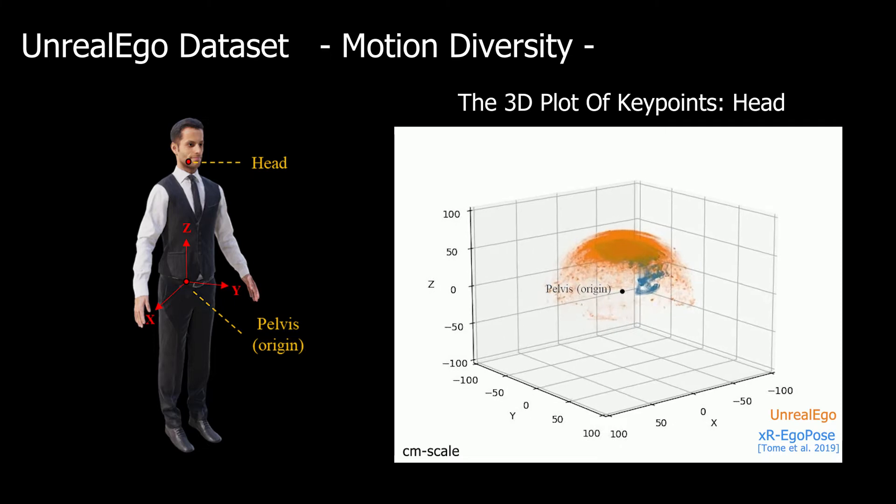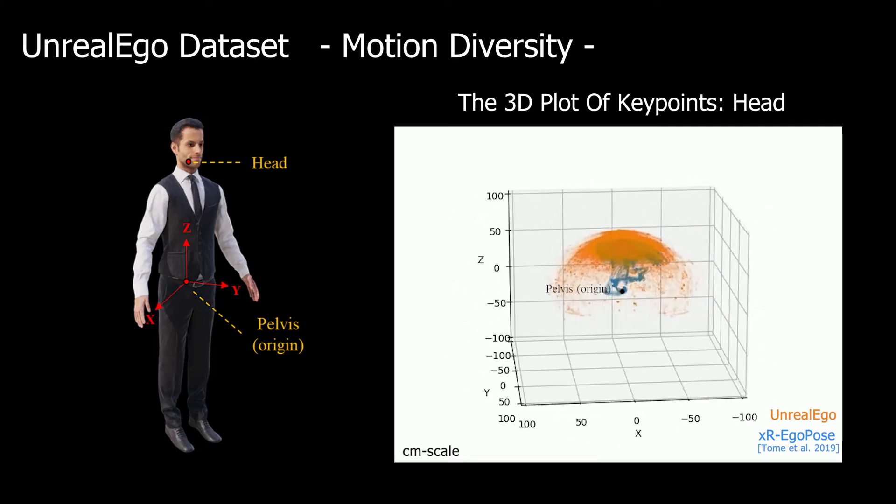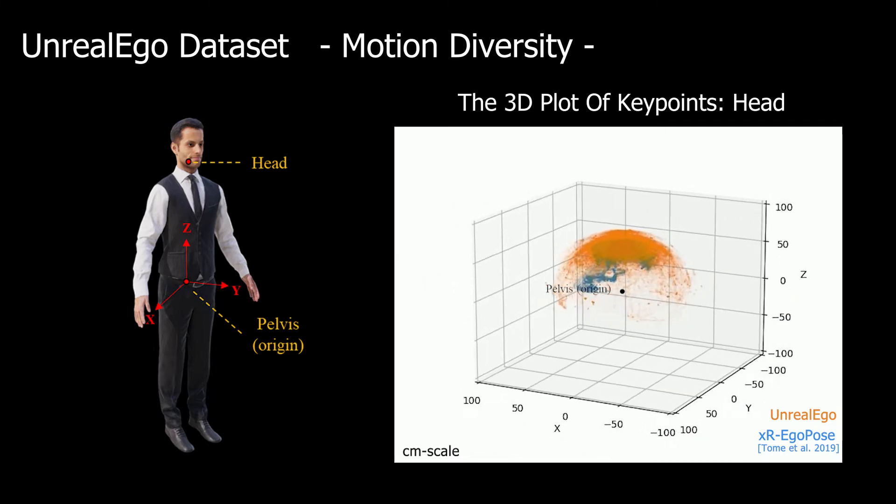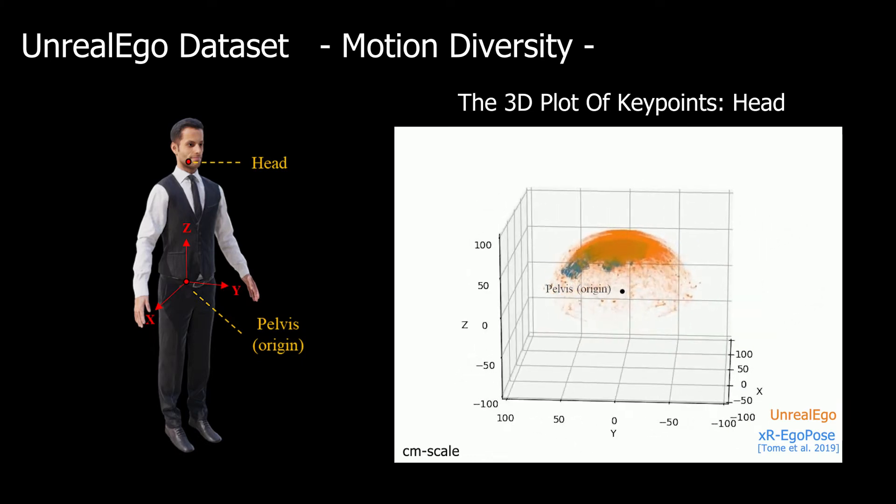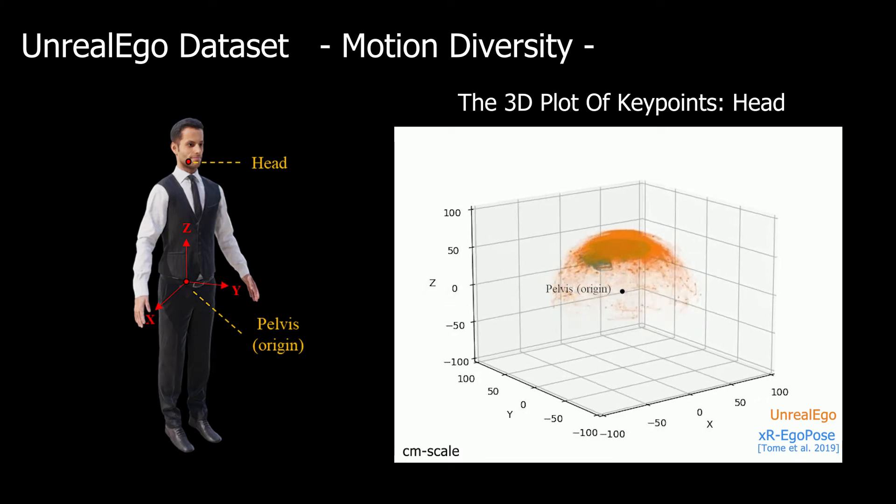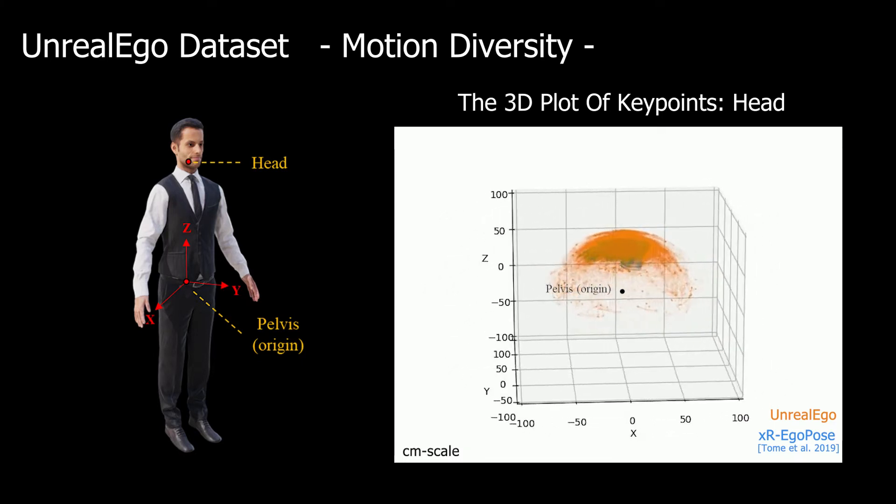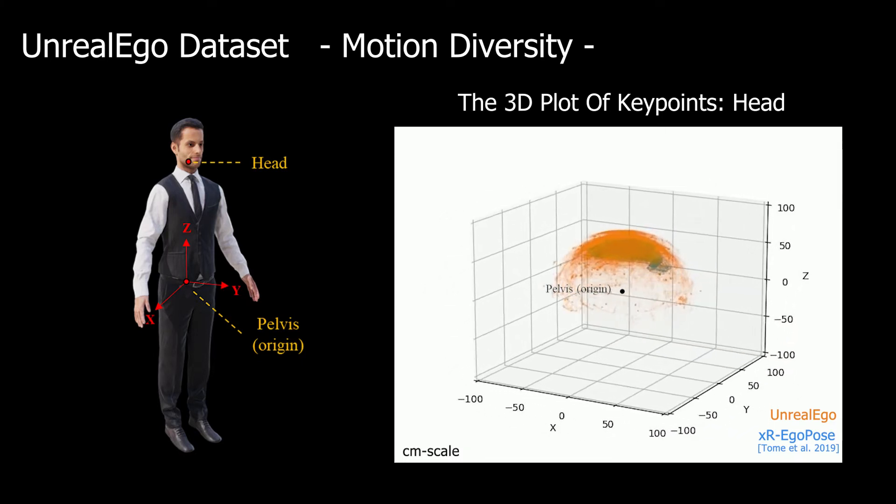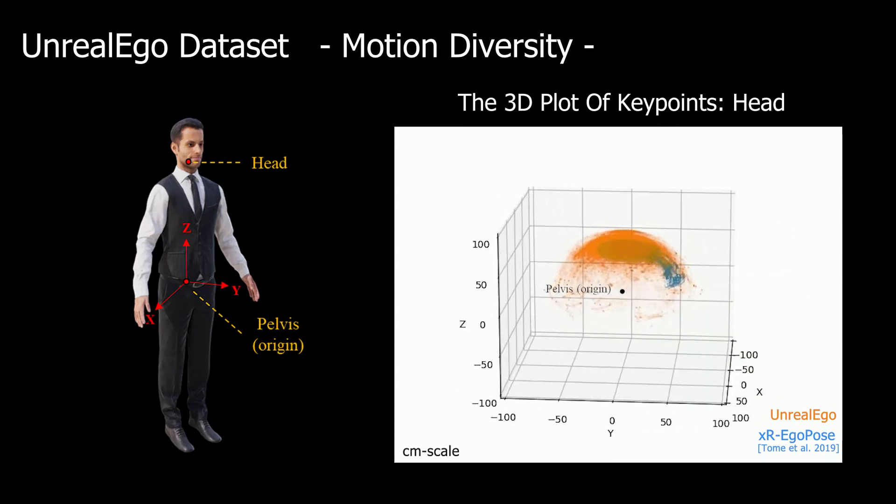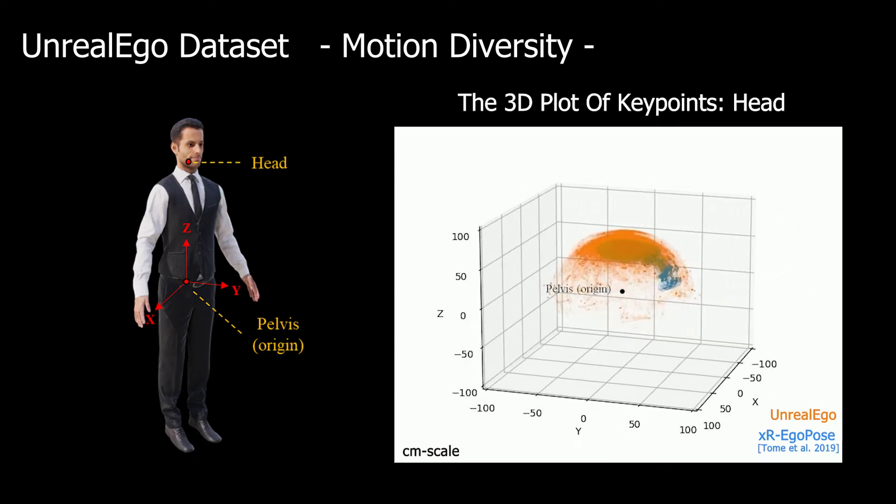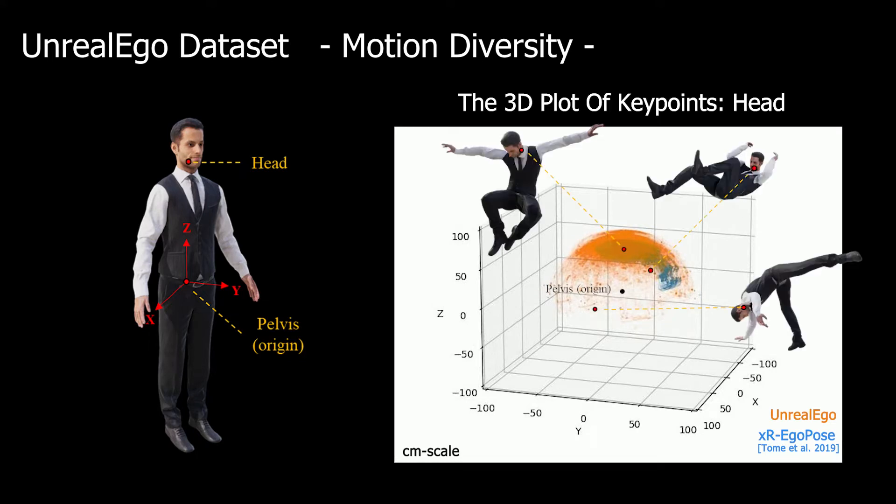Motion diversity is our top priority. Here, we visualize the distributions of head keypoints in the existing dataset, xR-EgoPose, and our proposed UnrealEgo. The coordinate system is relative to the pelvis. The head positions of xR-EgoPose are relatively fixed above the pelvis, whereas UnrealEgo shows a more widespread distribution. Example most challenging motions of UnrealEgo include jumping, exercising, and dancing.